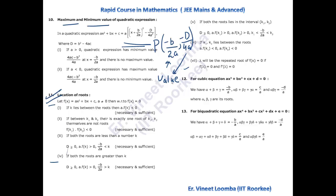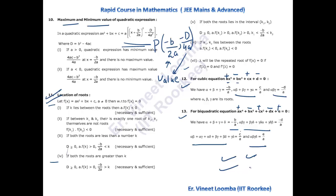Moving to points 12 and 13: for a cubic or higher degree equation, we assign alternating plus-minus signs to the coefficients. For a cubic equation ax³ + bx² + cx + d = 0: sum of roots = −b/a; sum of products of roots taken two at a time = c/a; product of all roots = −d/a. For a degree-4 equation ax⁴ + bx³ + cx² + dx + e = 0: sum of roots = −b/a; sum taken two at a time = c/a; sum taken three at a time = −d/a; product of all roots = e/a.